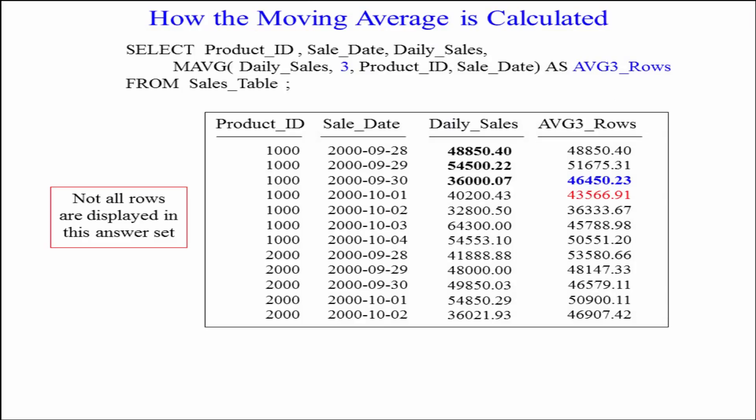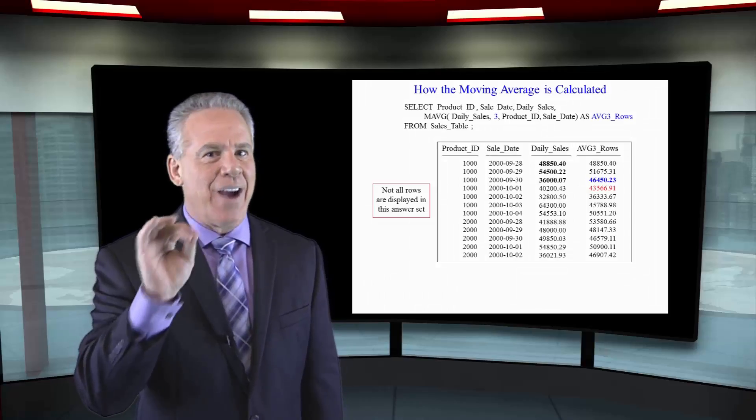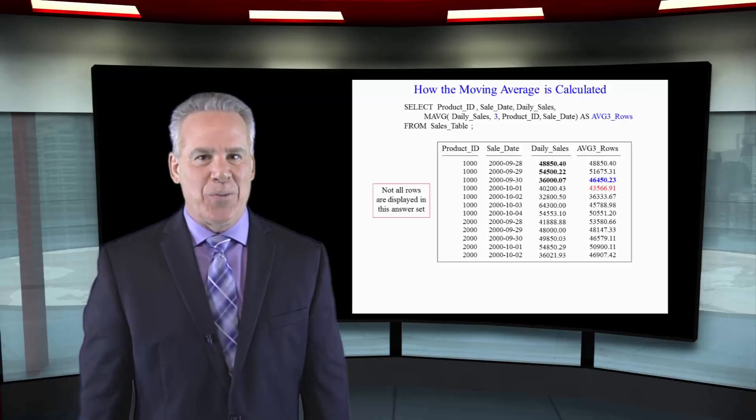What about that fourth row? That's going to be 43,566.91 in red. That's going to be the current row of 40,200, 36, and 54. Current row and the previous two, and that's how a moving average is going to work.